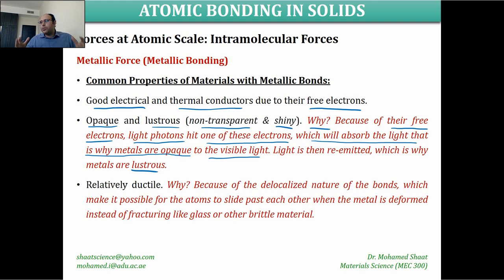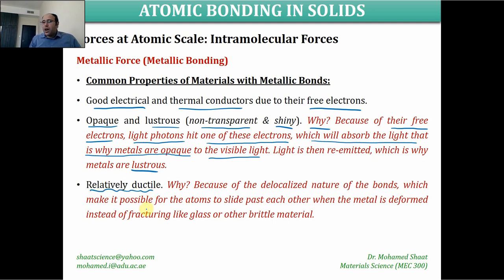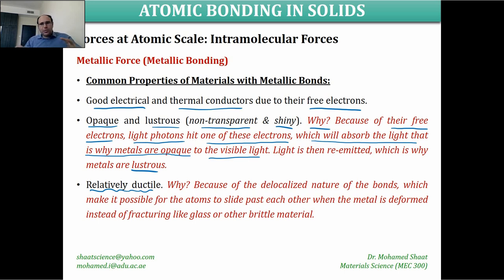Metals appear shiny or lustrous because after absorbing the light photon, the free electron re-emits the energy, reflecting the light back. So metals are opaque because photons are absorbed by free electrons and cannot pass through; and they are shiny because the absorbed photon energy is re-emitted or reflected back.